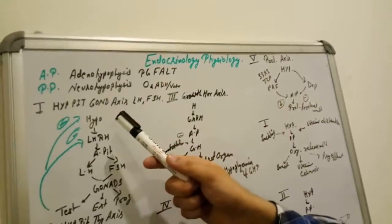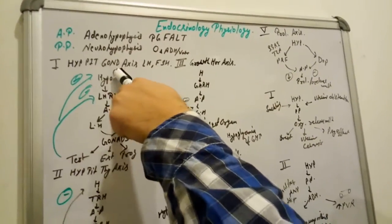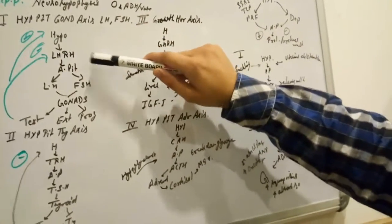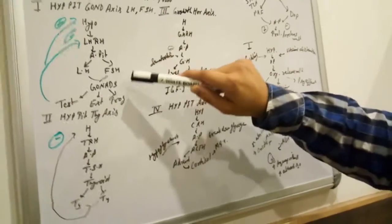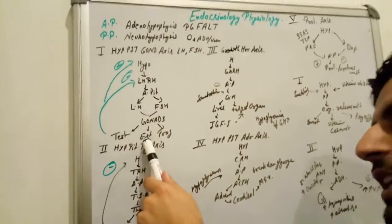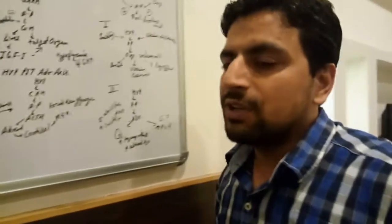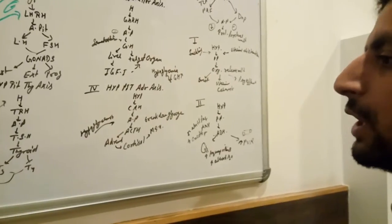First, we go for anterior pituitary hormones. We are going to discuss LH and FSH — the hypothalamus-pituitary-gonadal axis. Hypothalamus secretes LH releasing hormone, which goes to the anterior pituitary, which then releases LH and FSH. These go to the gonads, and the gonads release testosterone, estrogen, and progesterone. After that, they give a feedback signal to the hypothalamus not to produce excess LHRH because there is a sufficient amount.